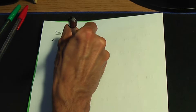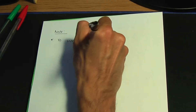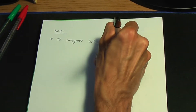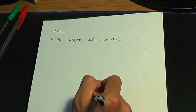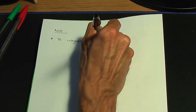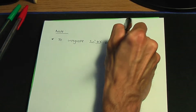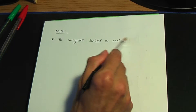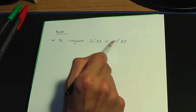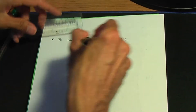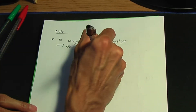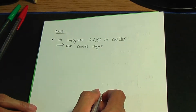The first note is: if you want to integrate a sine squared term or a cos squared term — so sine squared of kx, or cos squared of kx, where kx is a linear angle — you need to use the double angle trigonometric identity for cos.